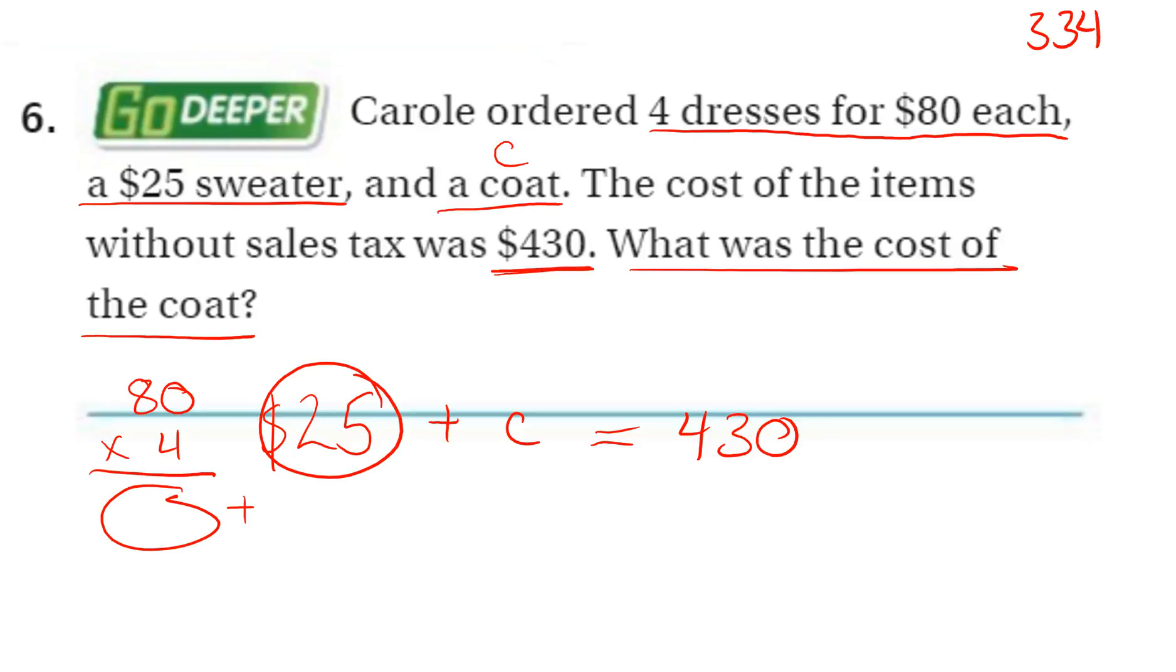Okay, so let's find out how much she spent on the dresses. 4 times 0 is 0. 4 times 8 is 32. Plus $25 for the sweater. That's $345.